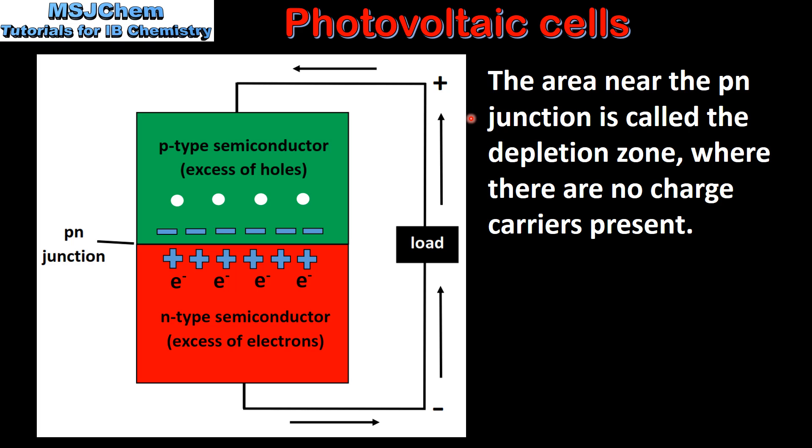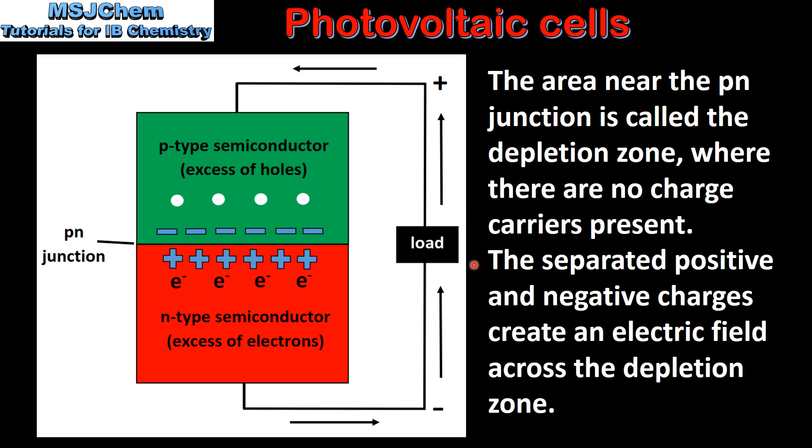The area near the p-n junction is called the depletion zone, where there are no charge carriers present. The separated positive and negative charges create an electric field across the depletion zone.